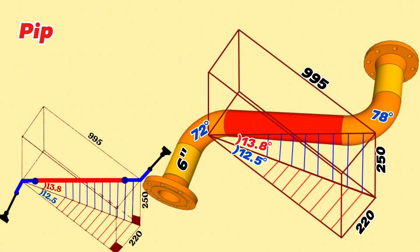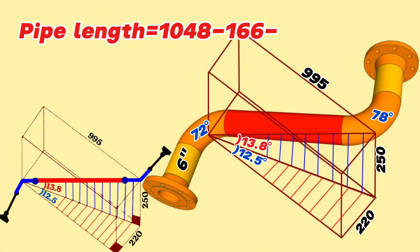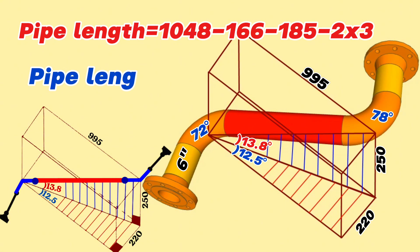Pipe length equals total length 1048 mm, minus 6 inch 72 degree butt weld elbow length 166 mm, minus 6 inch 78 degree butt weld elbow length 185 mm, and minus 2 times the gap for welding of 3 mm. We calculate and find the length of the 6 inch pipe section on this pipeline is 691 mm.